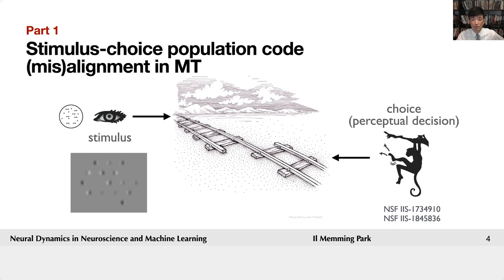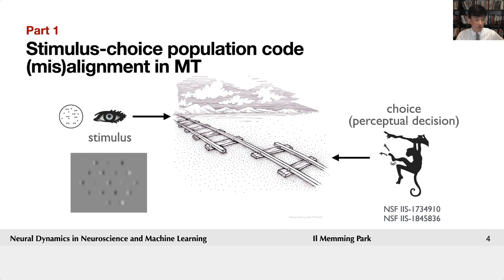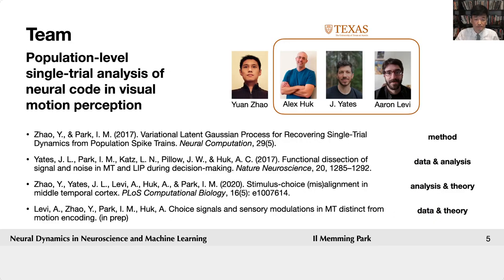Here, my goal is to understand the neural code of the population in terms of their sensory stimulus representation and their choice behavior in decision making. In a couple of experiments involving macaques, we found that the internal representation of visual stimulus and the perceptual decision based on the stimulus were paradoxically misaligned. This was led by a brilliant postdoc in my lab, Yuan Zhao, and it's a collaboration with Alex Huck's group at UT Austin.